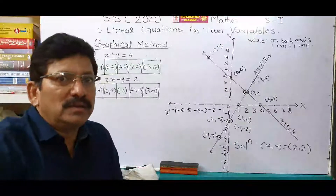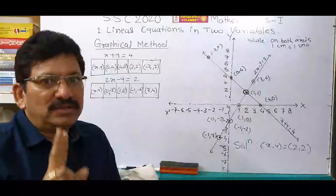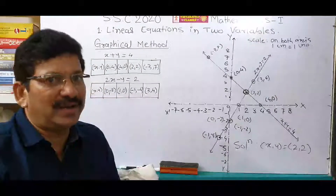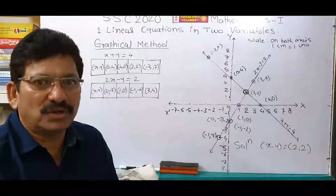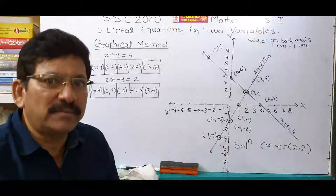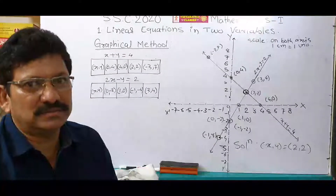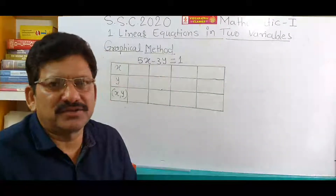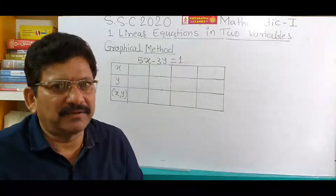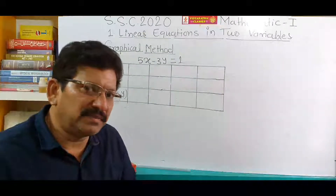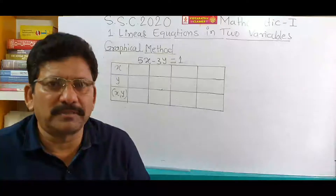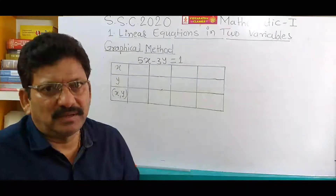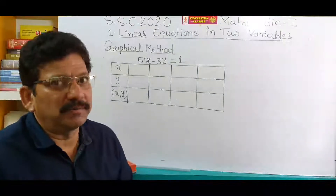In this method, we draw the graphs of the given two simultaneous equations, and the point of intersection of these two lines is the solution of the simultaneous equations. Students, you have learned how to solve simultaneous equations by the graphical method. In this method, finding 4 ordered pairs for each equation is most important, and I have taught you how to find the 4 ordered pairs by putting x equal to 0 and y equal to 0.